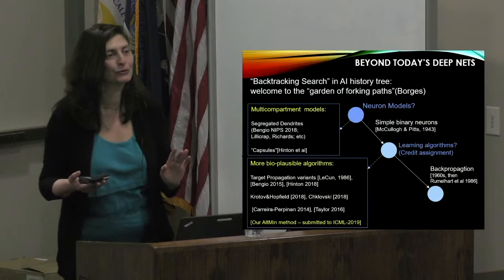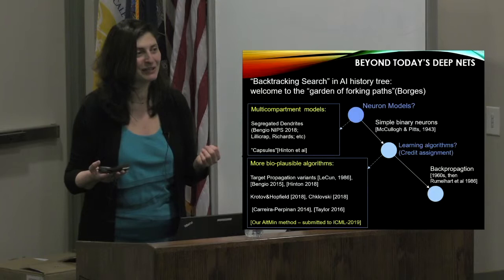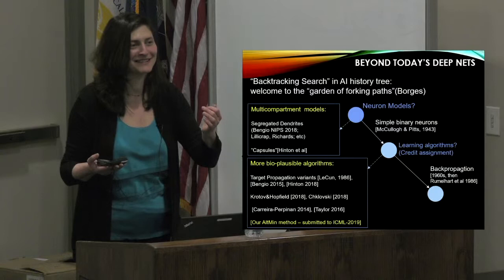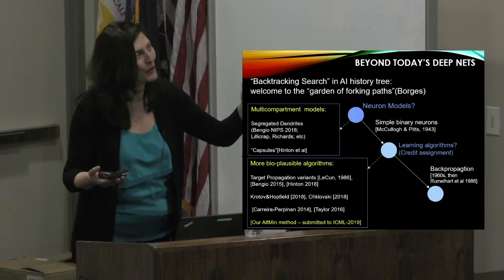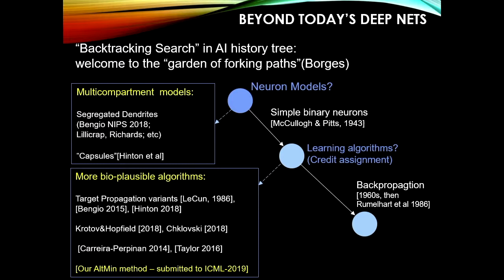Let's ask: what if the McCulloch-Pitts neuron model were replaced by something more sophisticated, and when backpropagation began ruling the world, what if different algorithms had been developed? These questions are being explored: more specific segregated dendrite models appear at NIPS, Hinton's capsule networks are somewhat in that direction, and beyond backpropagation, more biologically plausible and hopefully more efficient algorithms are a hot topic.